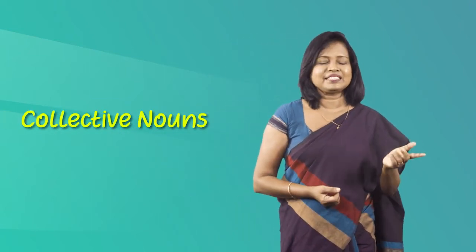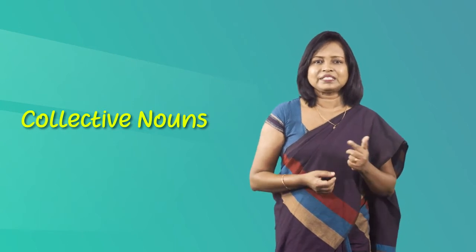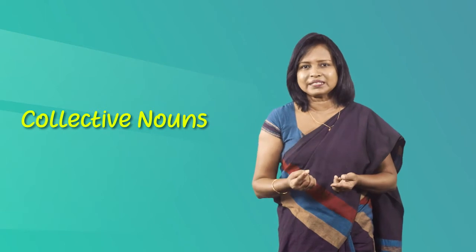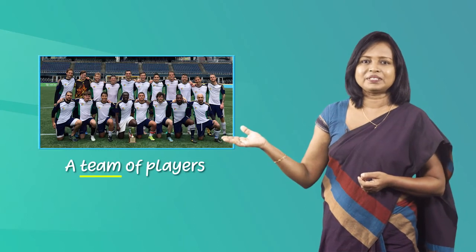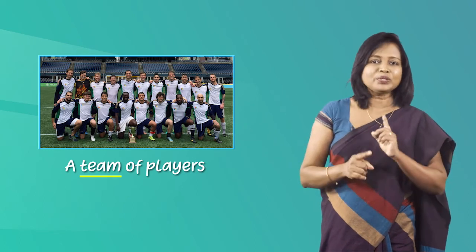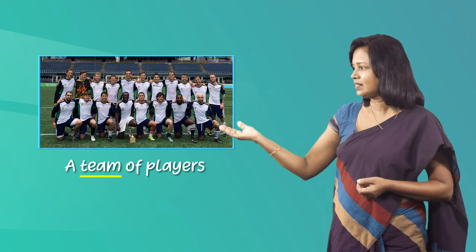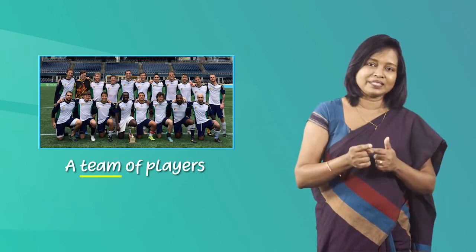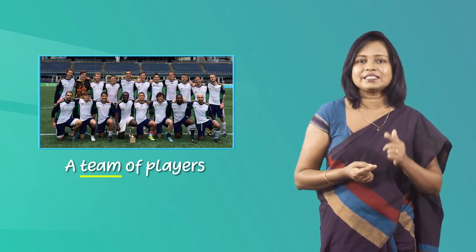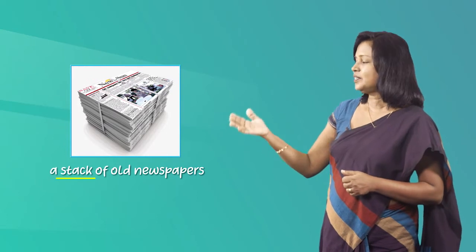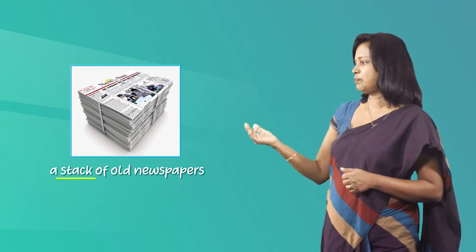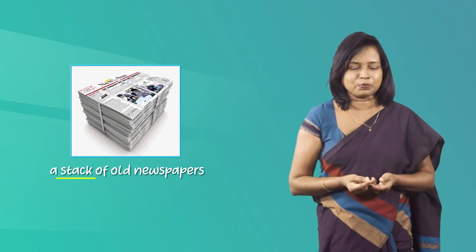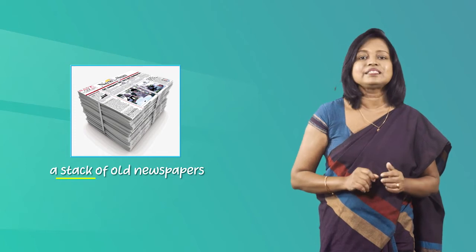Although you may not know it, you come across collective nouns in everyday speech. Collective nouns are words for single things that are made up of more than one person, animal, place or thing. Now look at this example — a football team. You can't have a football team with only one individual. There are many individuals in this team, but still we refer to it as a single unit. Here you have a stack of old newspapers — there are many newspapers in this stack, but the stack is a single unit. It's a collective noun.